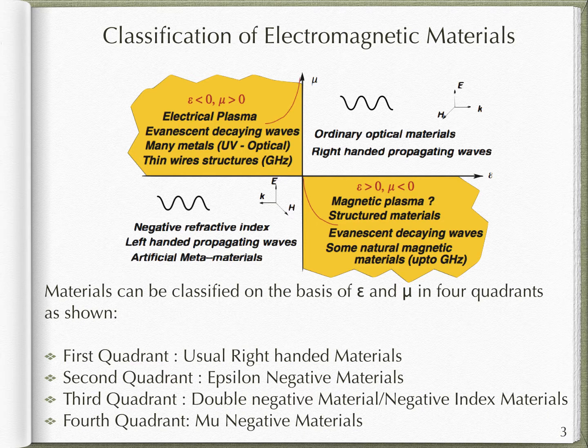The second quadrant where epsilon is negative and mu is positive describes electric plasmas which support evanescent decaying waves. It is also called epsilon negative materials. The fourth quadrant where epsilon is positive and mu is negative also supports evanescent decaying waves, corresponding to mu negative materials. The third quadrant where both epsilon and mu are negative represents metamaterials.